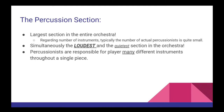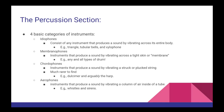The percussion section is the largest section in the entire orchestra. It boasts both the loudest and the quietest instruments available. It's the responsibility of the percussionist to perform many different instruments within the same piece of music. Despite their overwhelming variety, each percussion instrument can be sorted into one of four categories: idiophones, membranophones, chordophones, and aerophones.